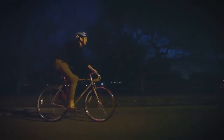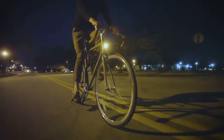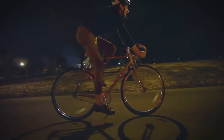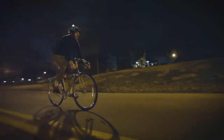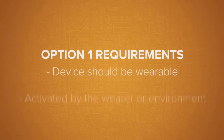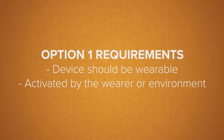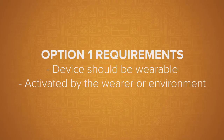The first problem option considers outdoor safety, specifically when performing outdoor activities in the dark. If your team chooses this option, you'll design and program a device that creates safer conditions in the dark. The device should be wearable and activated by the wearer or environmental conditions like the setting sun.